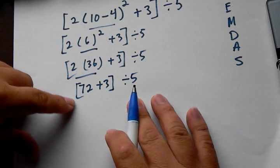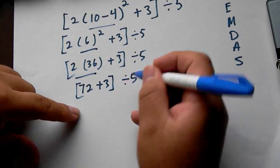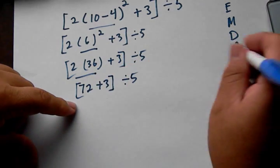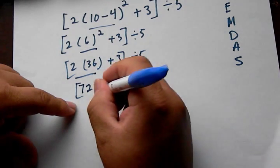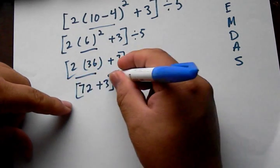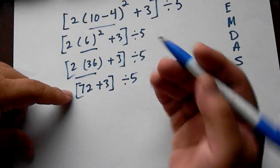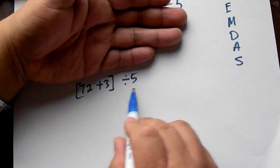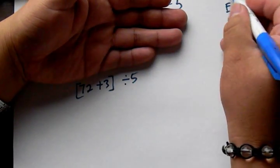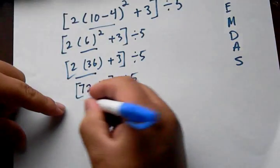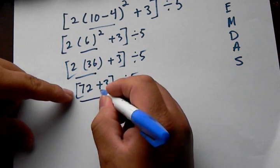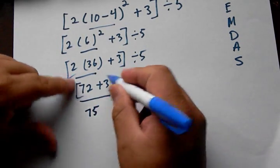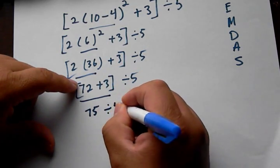Now we follow addition. Since we have these brackets or parentheses separating it by itself, we look at it as an individual problem. So we have to do parentheses first — 72 plus 3 equals 75. And now we can get rid of the brackets.